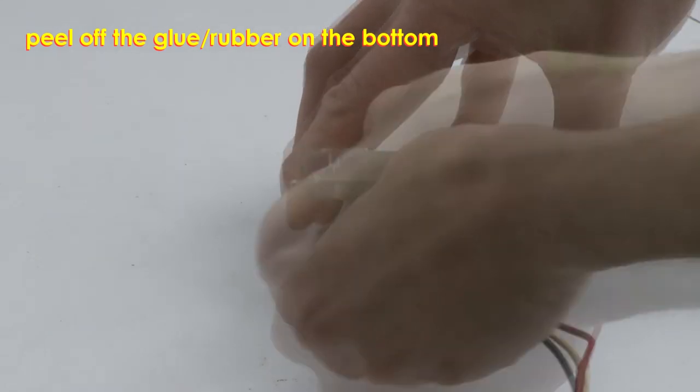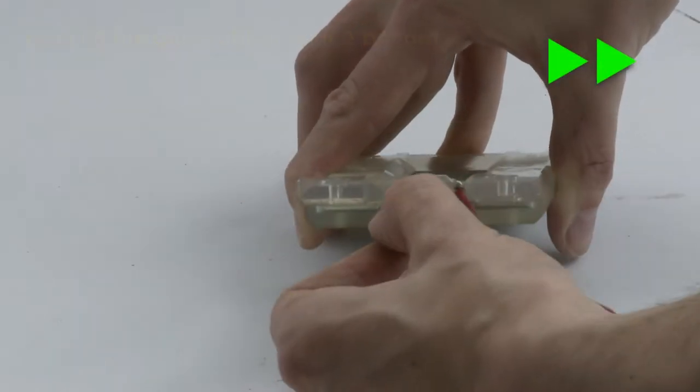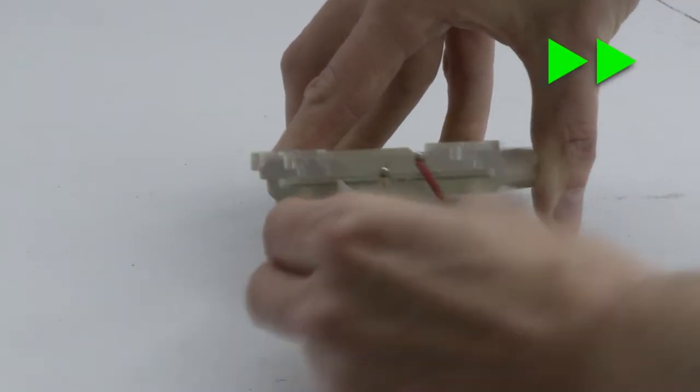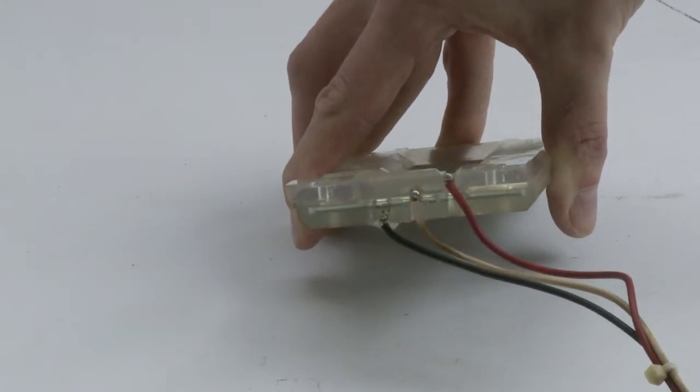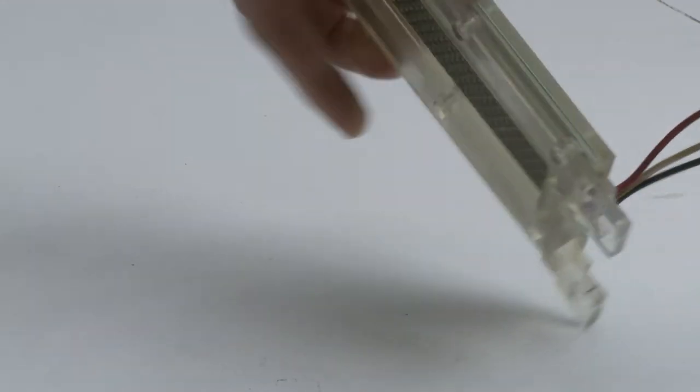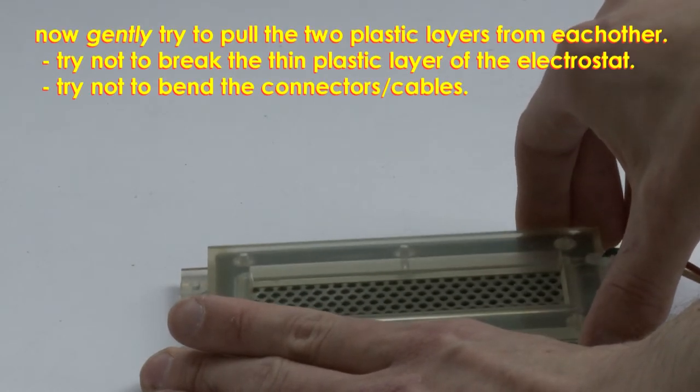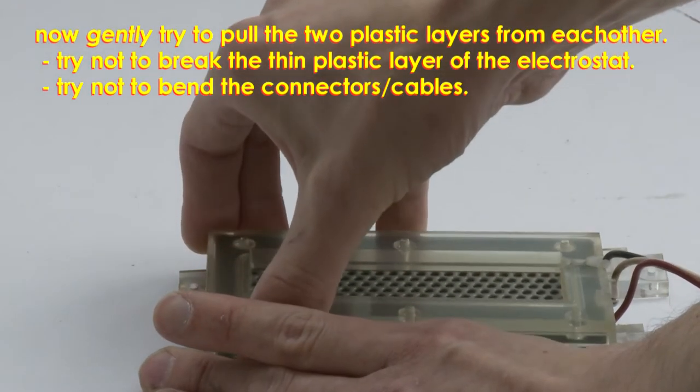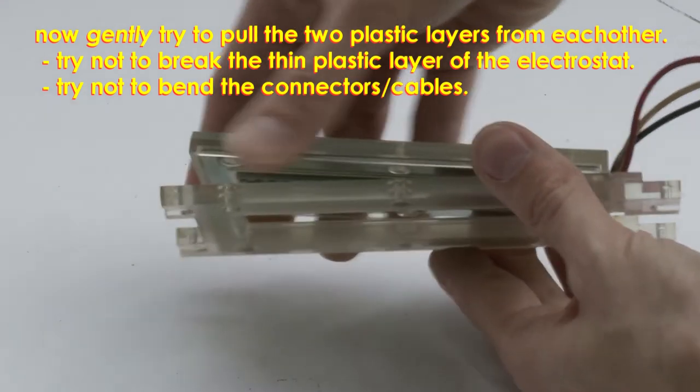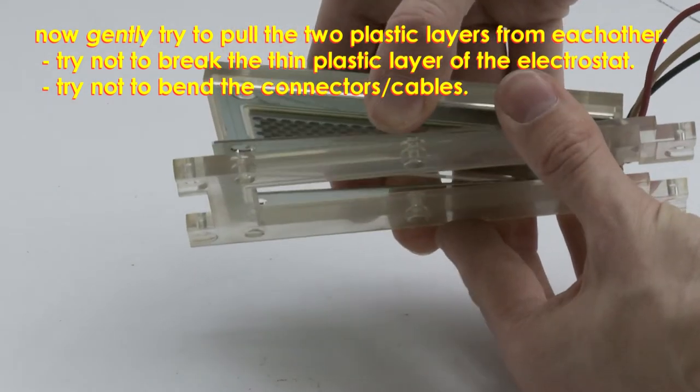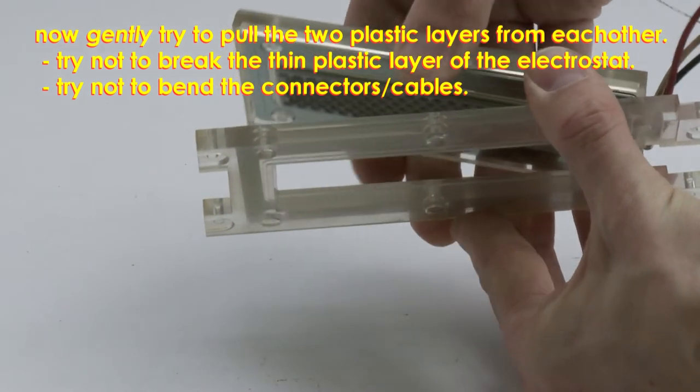Peel off the rubber that's at the bottom of the electrostats. Now gently pull the two plastic layers from each other. Try not to break the thin plastic layer of the electrostats that's in the middle and do not bend the connector cable at the bottom.